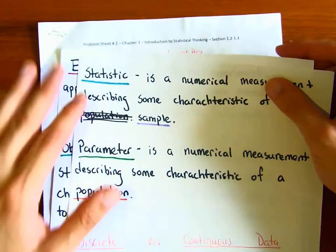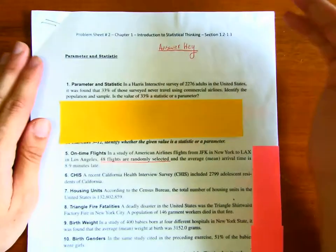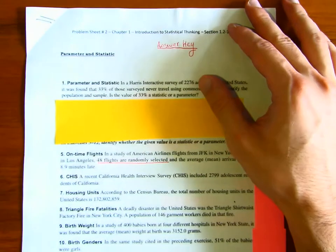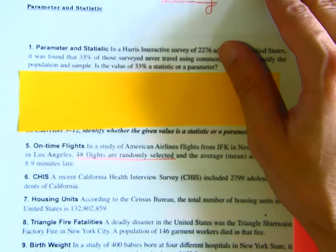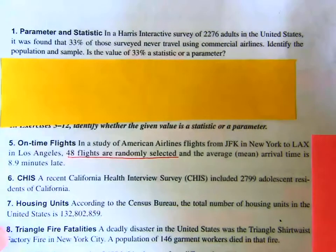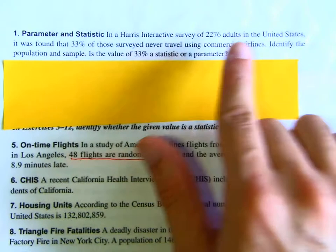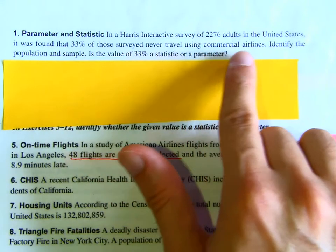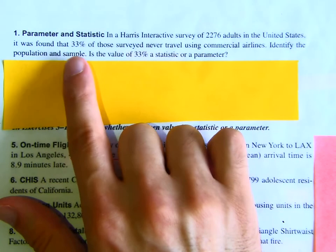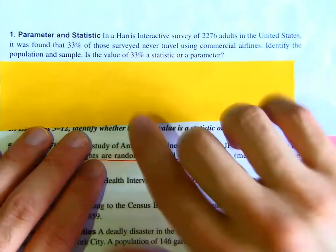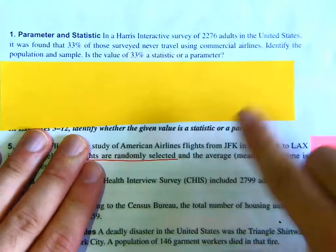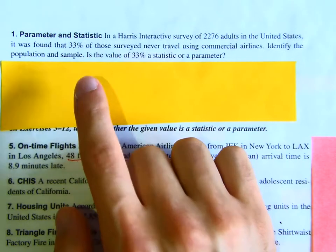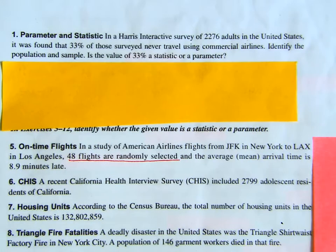Let's look at some examples on the worksheet. The first question: in a Harris Interactive survey of 2,276 adults in the United States, it was found that 33% of those surveyed never traveled using commercial airlines. Identify the population and the sample. Pause the video and try to go through it before we even get to statistic and parameter.